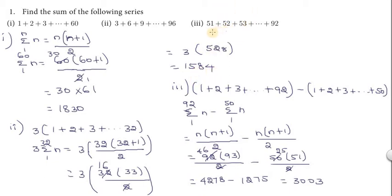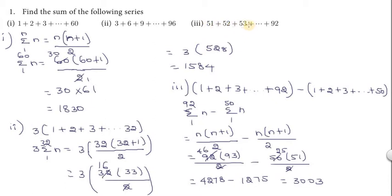Third problem: 51 plus 52 plus 53, continuing up to some number. Since it starts at 51, we use the subtraction method. Write 1 plus 2 plus 3 up to 92, minus 1 plus 2 plus 3 up to 50. So we compute summation 1 to 92 minus summation 1 to 50.